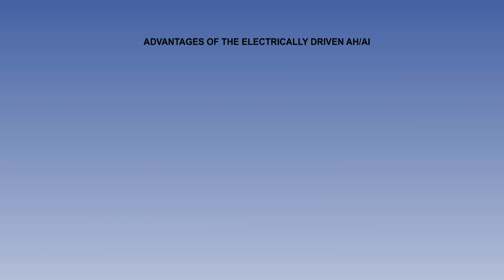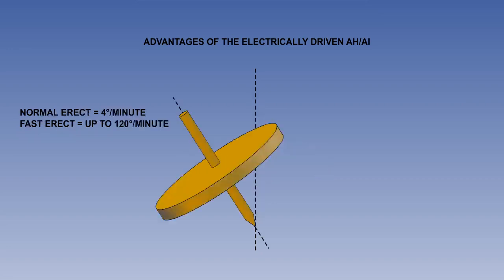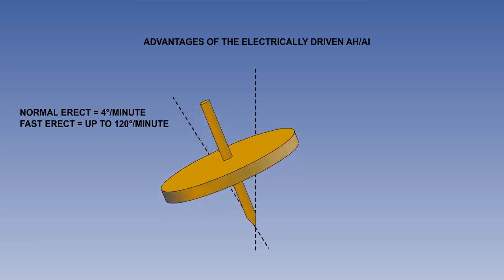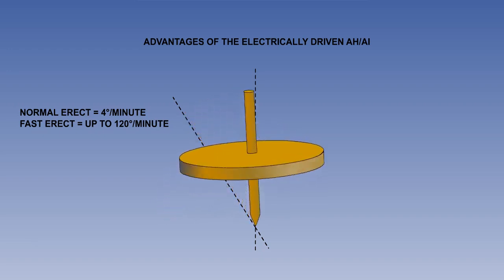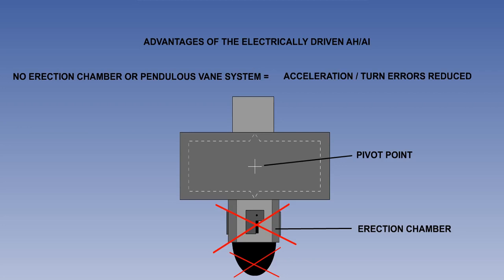Advantages of the electrically driven artificial horizon over the air-driven instrument include: firstly, greater rigidity due to the higher spin rate possible, which gives a low precession rate and more accuracy; secondly, a fast erection system can be incorporated which can erect a toppled gyro at up to 120 degrees per minute compared to the normal rate of 4 degrees per minute; and thirdly, as there is no requirement for a heavy erection chamber and pendulous vane system, acceleration and turn errors are eliminated or reduced.